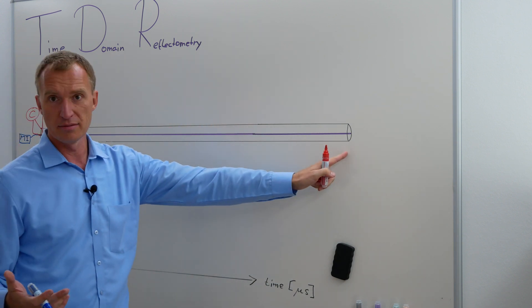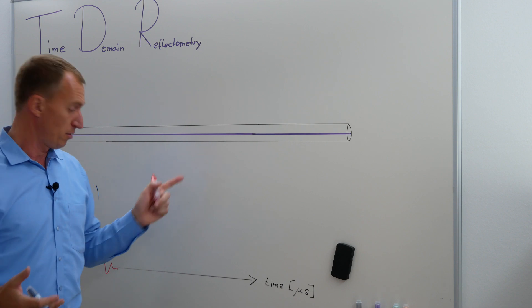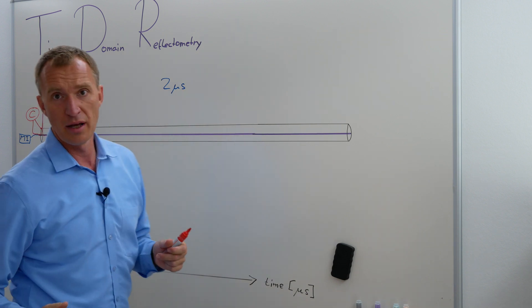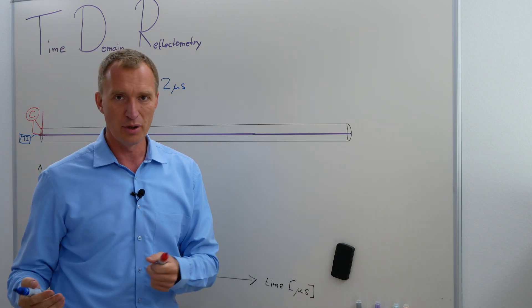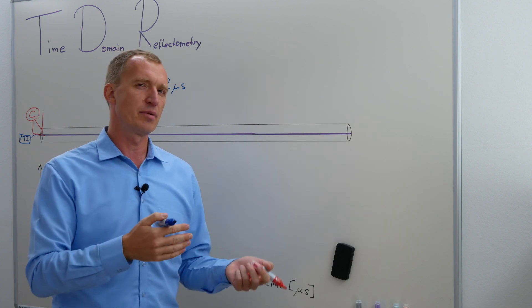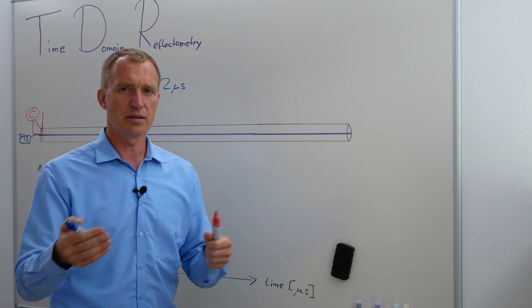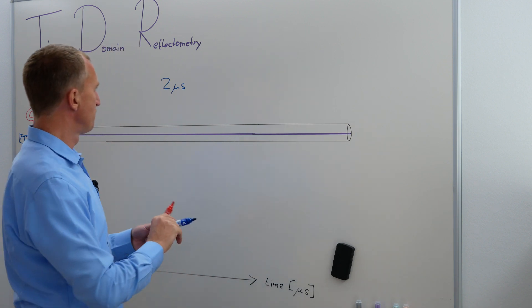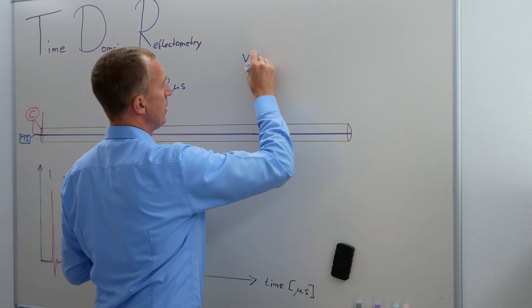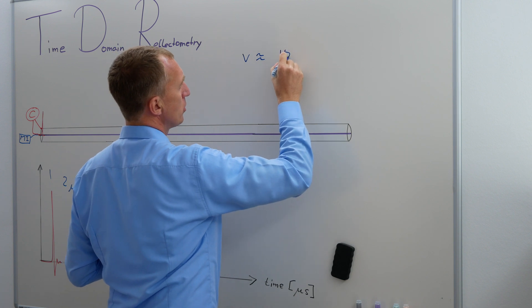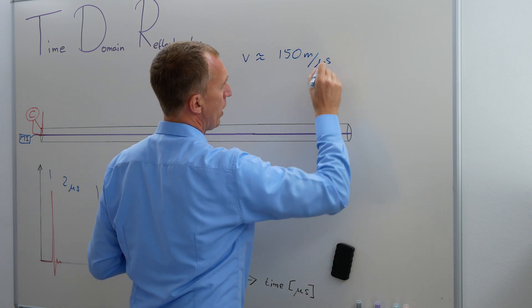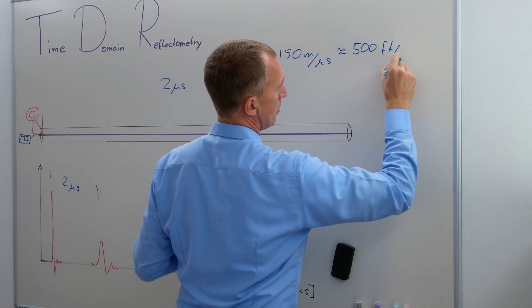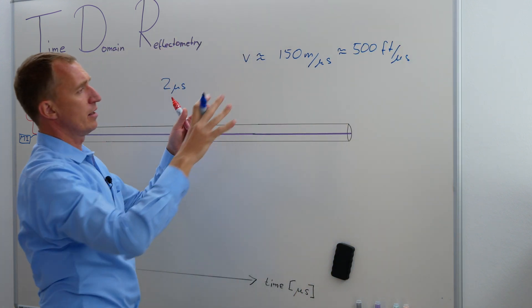Because it takes one microsecond to go here, I won't be able to measure anything here. If it comes back, then I have waited two microseconds. Awesome! So the cable is two microseconds long, and now, depending on the cable, depending on where you are in the world, that's a different length. High-voltage cables have the tendency to have a little bit of a faster propagation speed. Medium-voltage cables are lower, and then it depends on the insulation. So let's say that the propagation speed is around 150 meters per microsecond, which is very roughly 500 feet per microsecond.